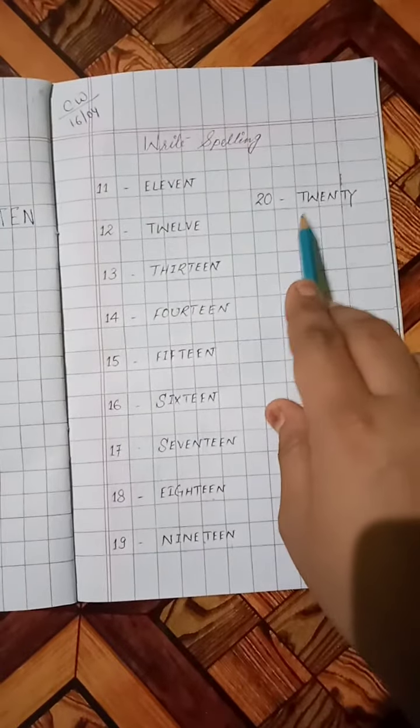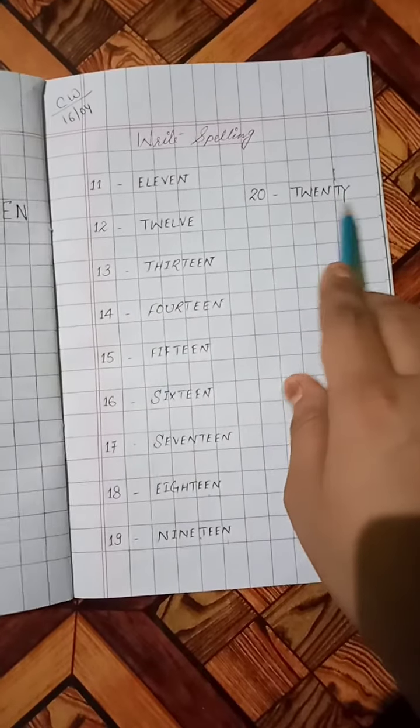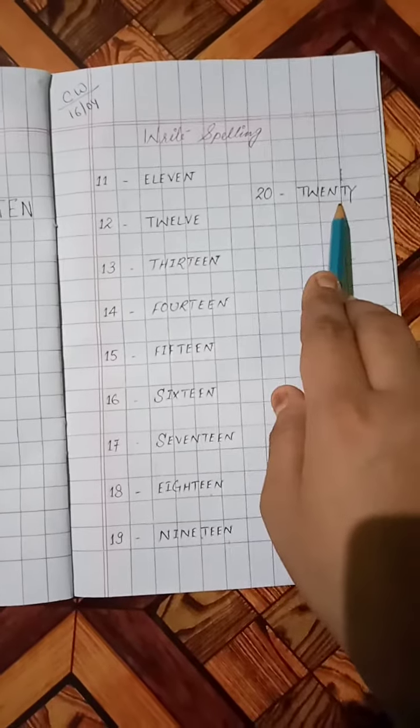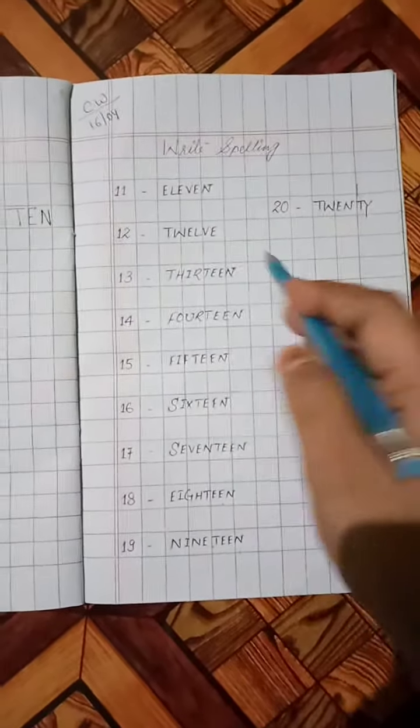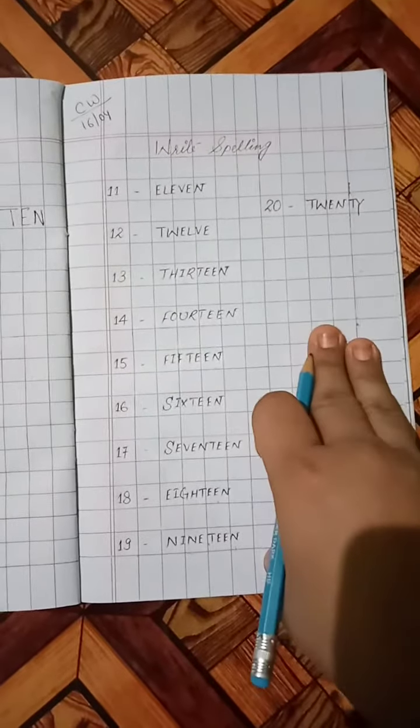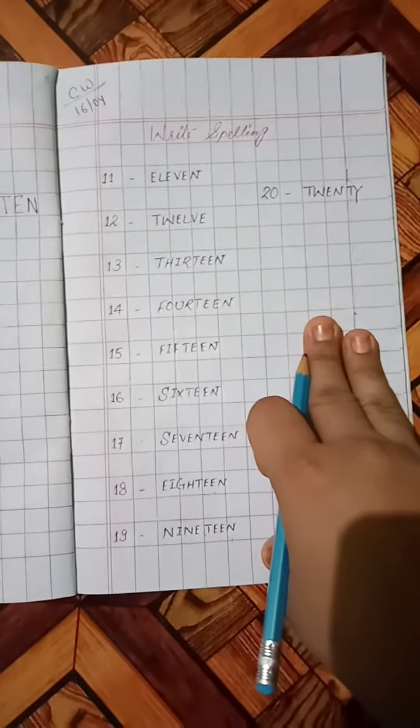T-W-E-N-T-Y, 20. So students, you have done the writing work. You must learn these all spellings. Be safe, keep learning. Thank you.